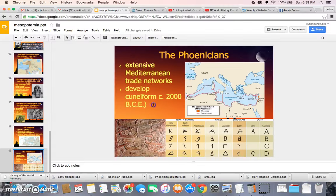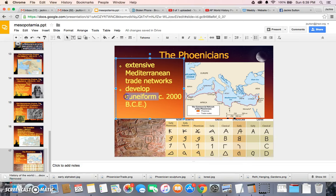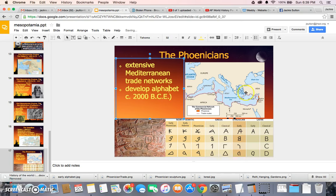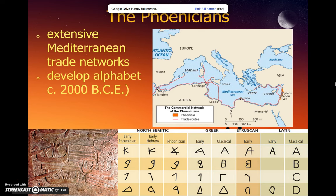I just caught a little typo — I cannot say that they developed cuneiform, because it's not cuneiform. Notice the Phoenician alphabet develops in approximately 2000 BCE, which is about a thousand years after cuneiform.